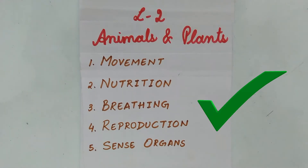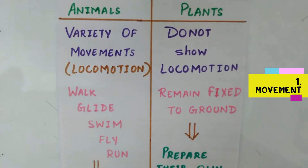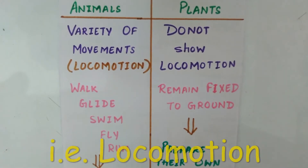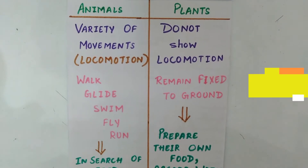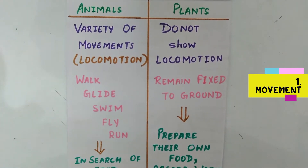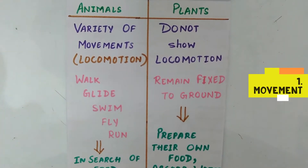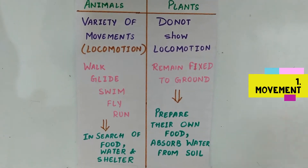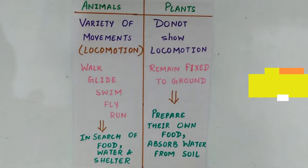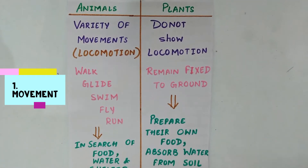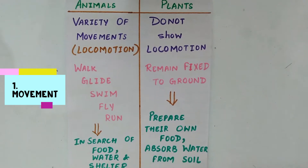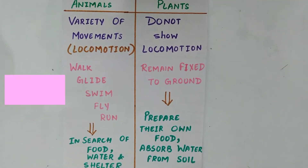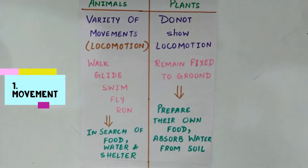Animals can do a variety of movements, that is locomotion: walk, glide, swim, fly, and run. This is done in search of food, water, and shelter. Plants do not show locomotion — they remain fixed to the ground.